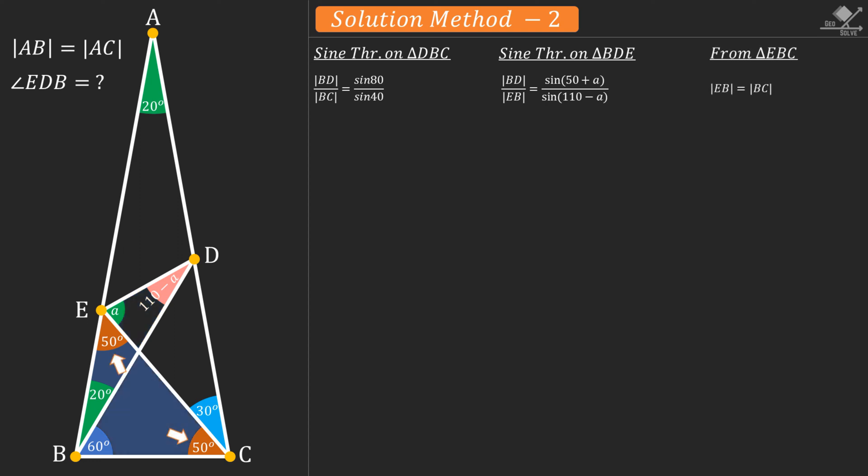We know that EB is equal to BC from the 50 degree base angles of isosceles triangle EBC. So we can equate the right side of the equations as follows. And instead of sine 80 term, we can write 2 times sine 40 times cosine 40. Now we can simplify sine 40 terms. And let's cross multiply to get the following equation.